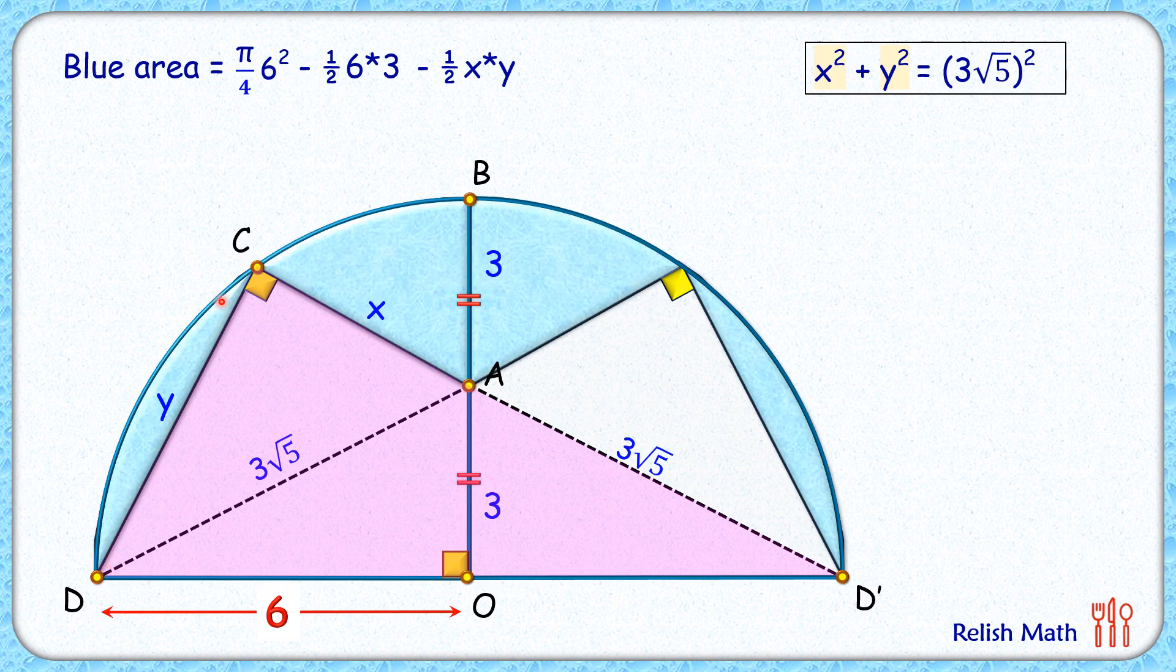In which applying Pythagoras theorem, we will get x plus 3 root 5 square plus y square is 12 square, because the diameter is 12.